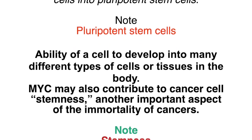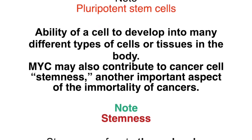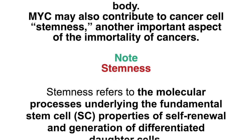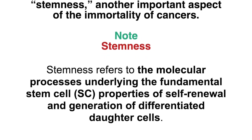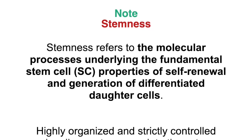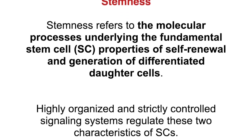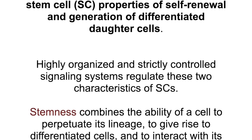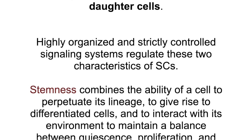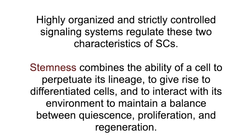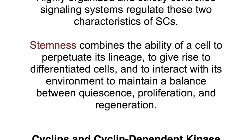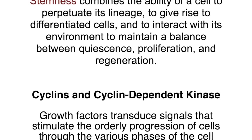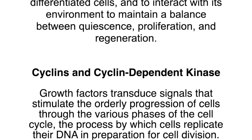MYC may also contribute to cancer cell stemness — another important aspect of the immortality of cancers. Stemness refers to the molecular processes underlying the fundamental stem cell properties of cell renewal and generation of differentiated daughter cells. Highly organized and strictly controlled signaling systems regulate these two characteristics. Stemness combines the ability of a cell to perpetuate its lineage, to give rise to differentiated cells, and to interact with its environment to maintain a balance between quiescence, proliferation, and regeneration.